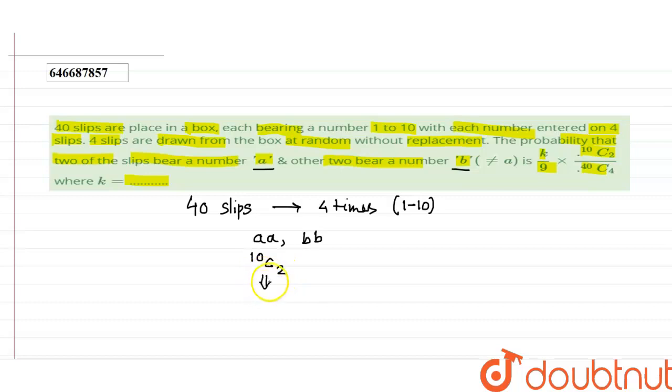This is the probability. 10C2 means choose A and B. This is the favorable cases.